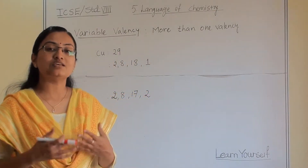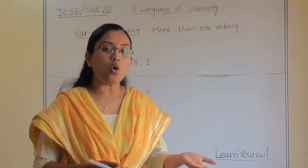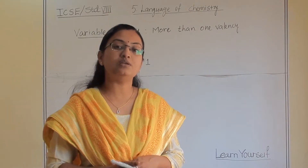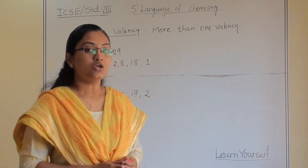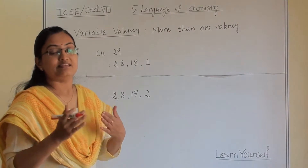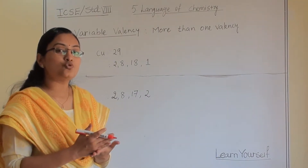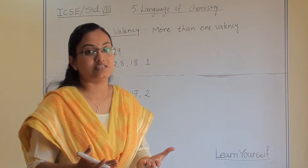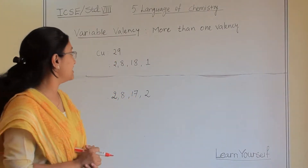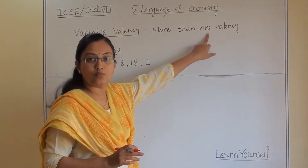Valency — we know that the number of electrons donated or accepted by any element will be its valency. So sometimes what will happen is that one element will show more than one valency. So they are known as variable valency, if they are showing more than one valency.